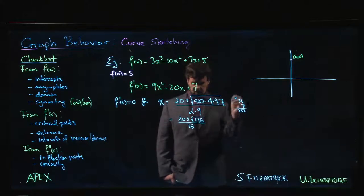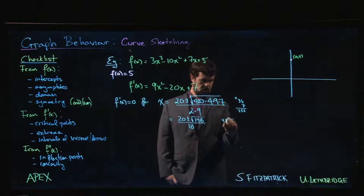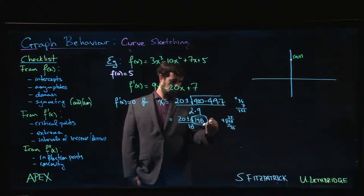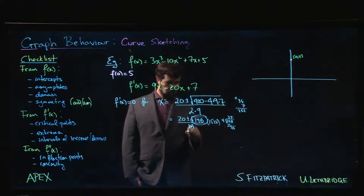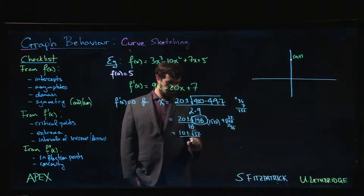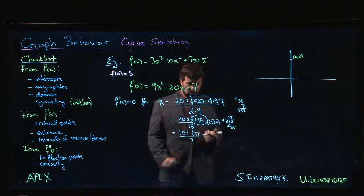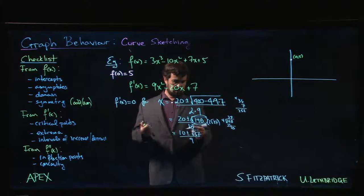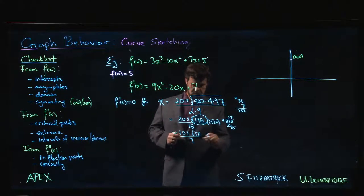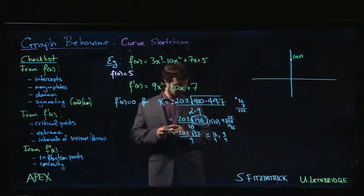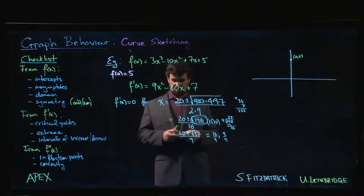148 is a multiple of 4, so we can simplify that. 4 goes into 148 to give us 37. So this is 2 root 37 over 18. Divide everything by 2, we've got 10 plus or minus root 37 over 9. Now 37 is just a little bit bigger than 36, and square root of 36 is 6, so this is about 10 plus or minus 6, giving us around 16 over 9 or 4 over 9. We can approximate those values if we have to.